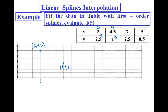This is the first linear spline, joining between x0, y0 and x1, y1 — that is between (3, 2.5) and (4.5, 1) — with slope m0.